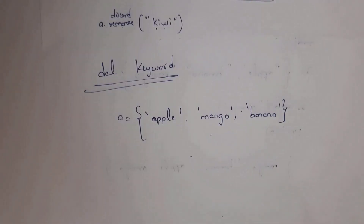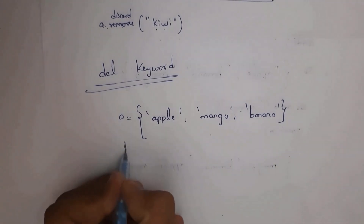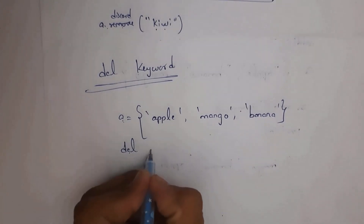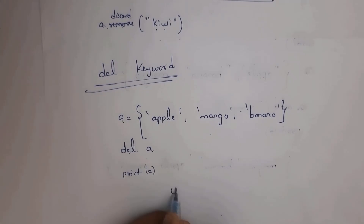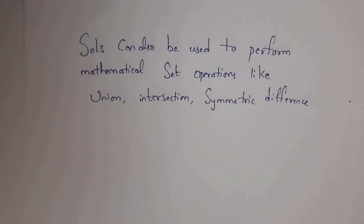By using the del keyword, you can remove a complete set. For example, just write del a — the set is present in variable a. Whenever you print(a) after that, you will get no output because we removed the set completely using del. We can also perform mathematical set operations like union, intersection, and symmetric difference.